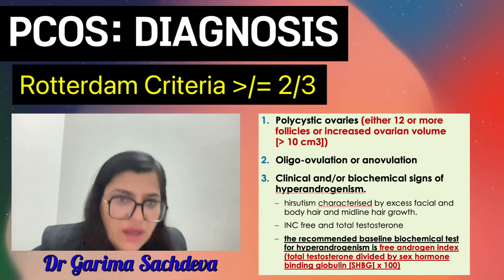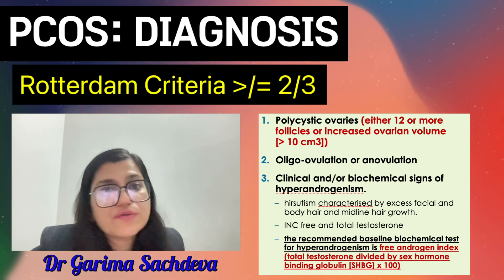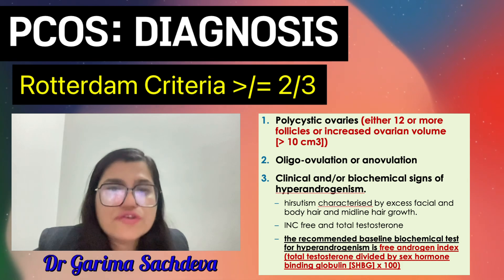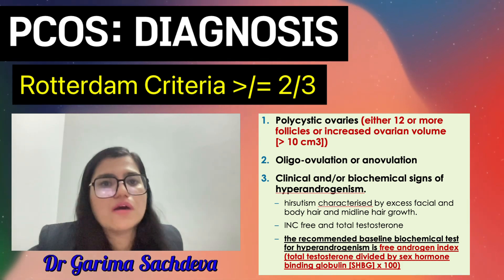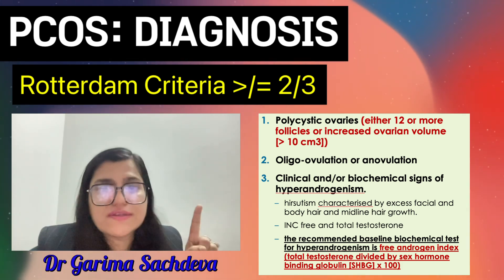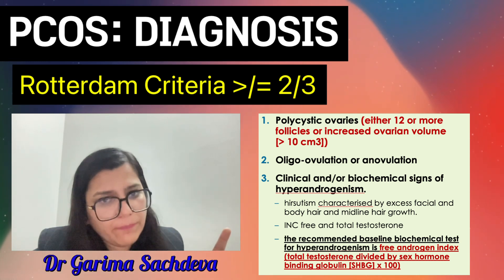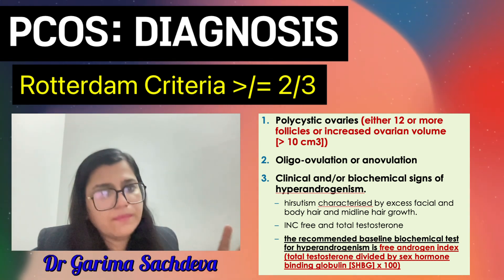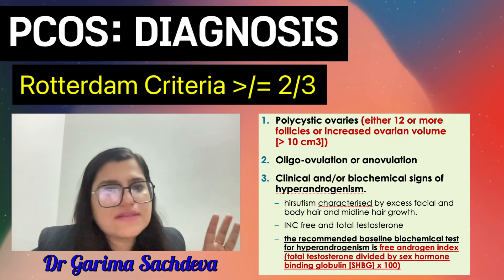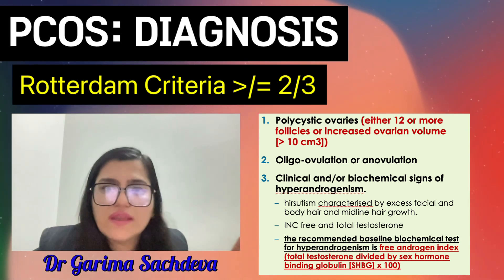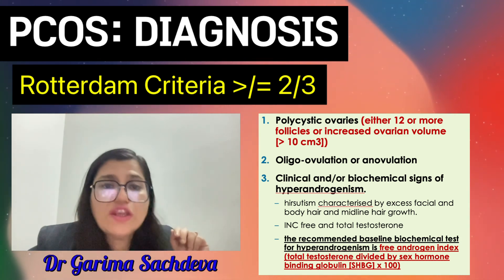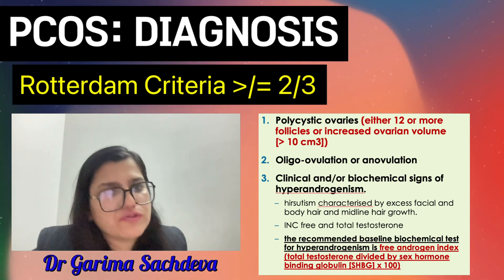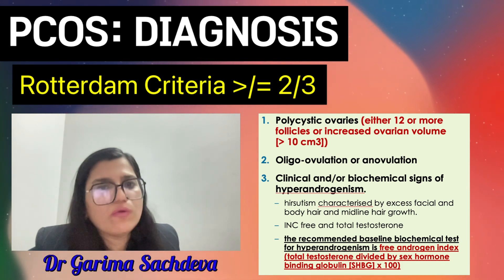In order to diagnose polycystic ovarian syndrome, two out of three features should at least be present. The first one is presence of ovulatory dysfunction, second is hyperandrogenism, and third is polycystic ovarian morphology on ultrasound. If any two of these are present, we call the patient to have polycystic ovarian syndrome.